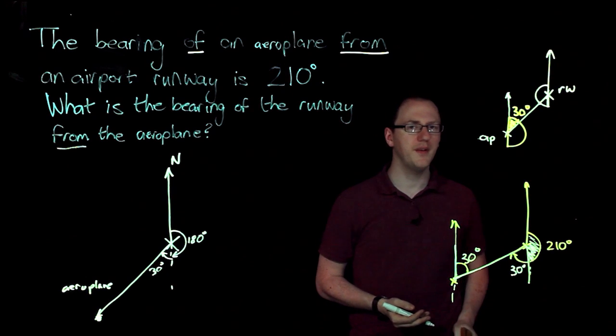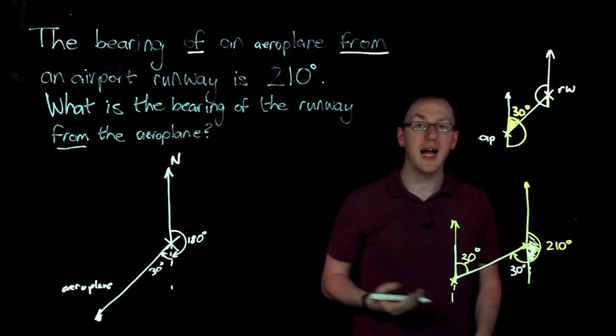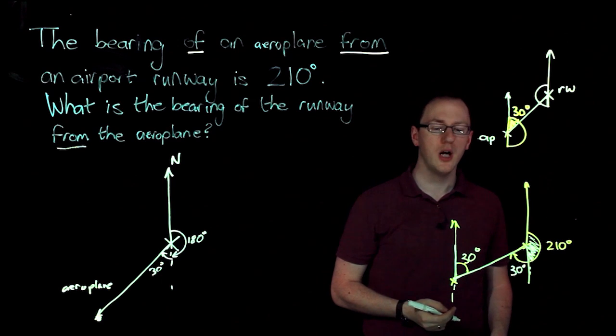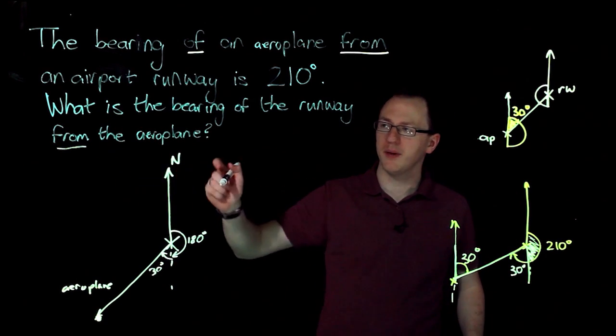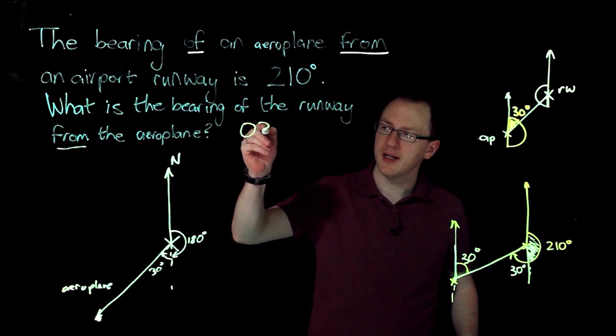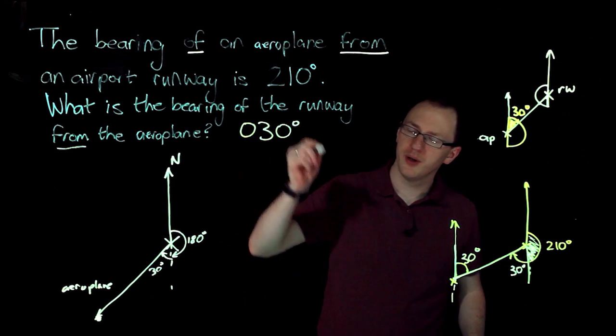But I've made a mistake in both of these. In both of these answers, I haven't quoted three figures. So I need to answer my question. What is the bearing of the runway from the aeroplane? The answer is going to be 030 degrees.